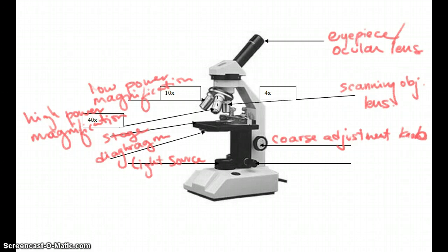And because you're magnifying so high, a big adjustment that is made in the coarse adjustment knob makes a huge difference in what you're looking at, and sometimes gets you away from the image you're trying to focus in on. So coarse adjustment knob is what you use just for the scanning objective lens.